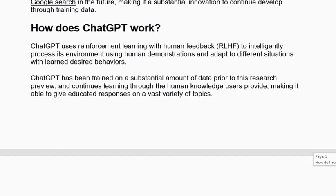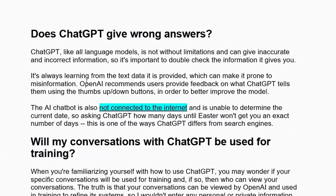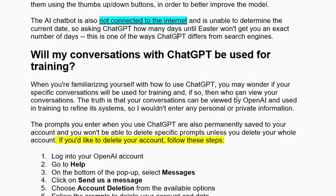Does ChatGPT give wrong answers? Yes, sometimes. Like all language models, it is not without limitations and can give inaccurate or incorrect information, so it is important to double-check the information it gives you. OpenAI recommends users provide feedback using the thumbs up/down buttons. Also, ChatGPT is not connected to the internet — it only has information up to 2021 and has no access to the latest data, so it cannot determine the current date. This is one of the ways ChatGPT differs from a search engine.